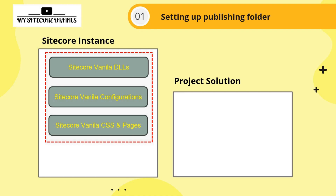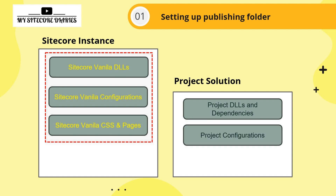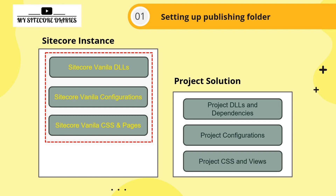When you set up your project solution, you also reference your Sitecore DLLs using NuGet — as we did in the project setup. So the similar DLLs will come into your project, along with your project DLLs and dependencies. You will also have your own project configuration, like Sitecore configuration patches as done in one of the videos, as well as project CSS, views, and so on.